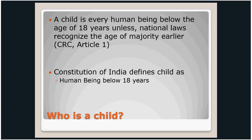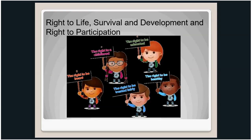As we all know, the UNCRC as well as the Constitution of India define a child as a human being below the age of 18. Both documents guarantee certain rights for children, including the right to live and grow properly, the right to basic health services, good nutrition, good care, and no discrimination — whether based on gender, economic background, religion, language, or caste.